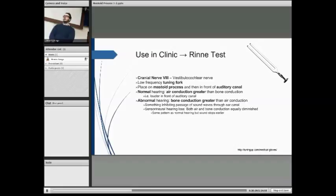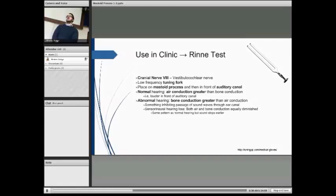You can have abnormal hearing of both conductive and sensorineural types. Conductive hearing loss is where there is an occlusion that stops sound waves passing through to the tympanic membrane. Sensorineural hearing loss is where both bone and air conduction diminish equally — it has the same pattern as normal hearing, but patients report the sound has gone before it actually has.